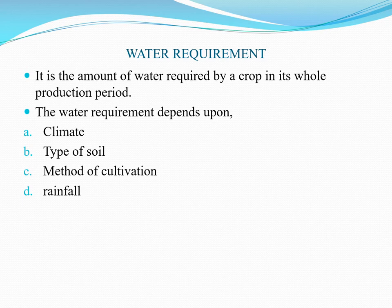The water requirement may vary with different crops at different places of the country. It depends on the following factors: climate, type of soil, method of cultivation, and rainfall. Regarding climate, whether the climate is dry, cold, or polar, the water requirement varies accordingly. Regarding soil type, whether the soil is sandy, clay, or silt, the water requirement given to the crop will vary.